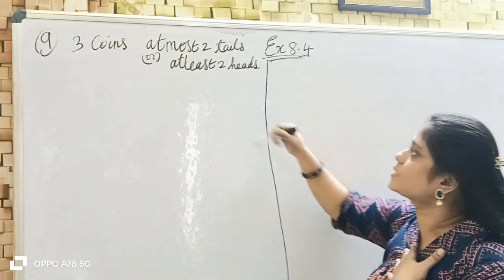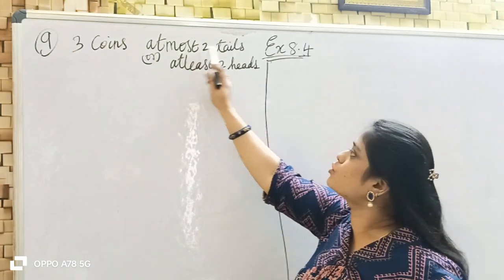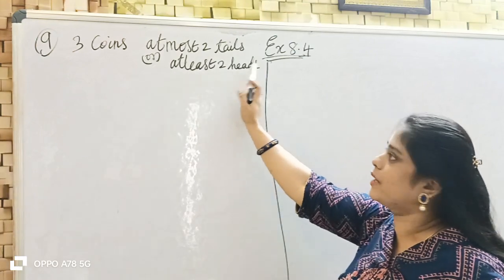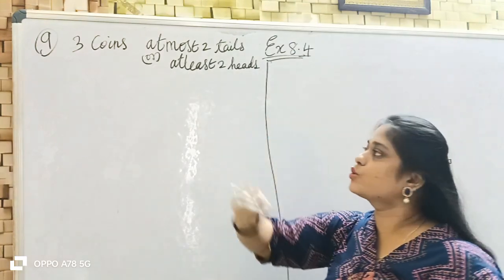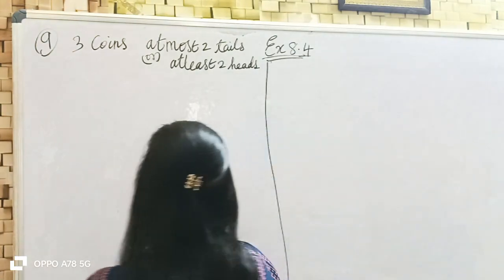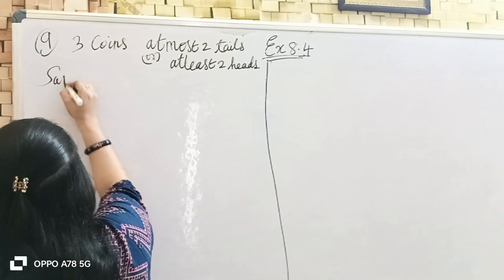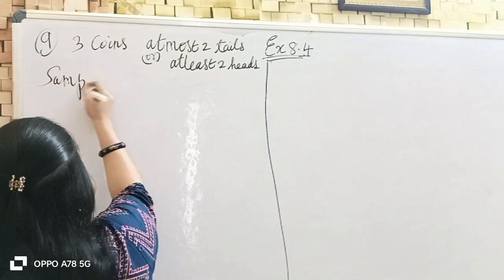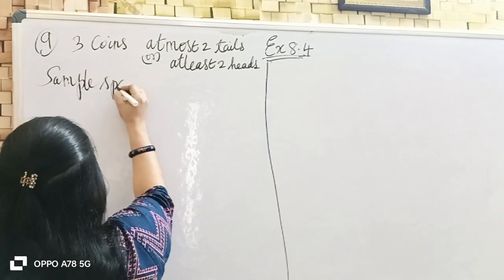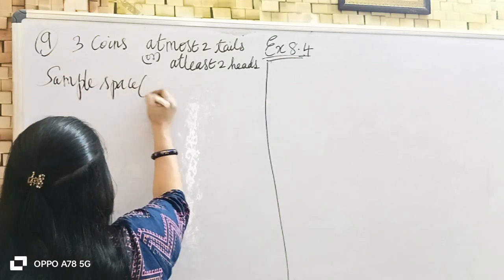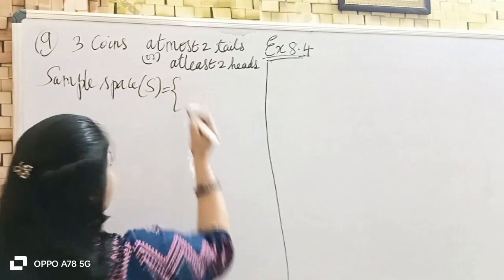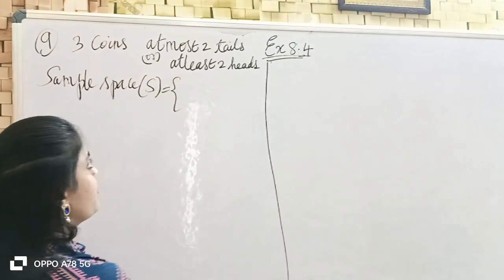So, three coins. At most two tails or at least two heads. So, three coins. First is sample space. Sample space — already the sample space is set up.